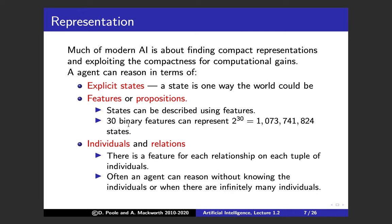Most features come from individuals and relations — there's a feature for every relationship among every tuple of individuals. For example, we might be uncertain about a student's mark on a particular assignment in a course; the individuals are the student, the course, and the assignment, and the relations among them build our features. An agent can often reason without knowing all individuals, or when there are infinitely many. In this course we'll mostly cover feature-based representations, though ultimately we want to reason about individuals and relations.